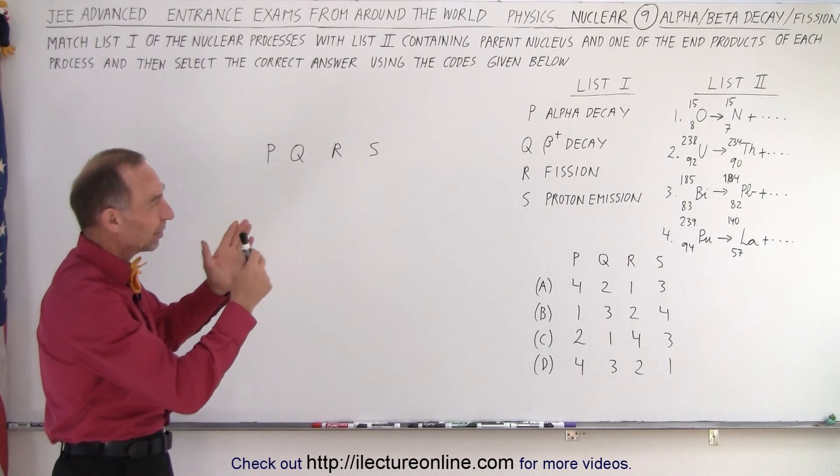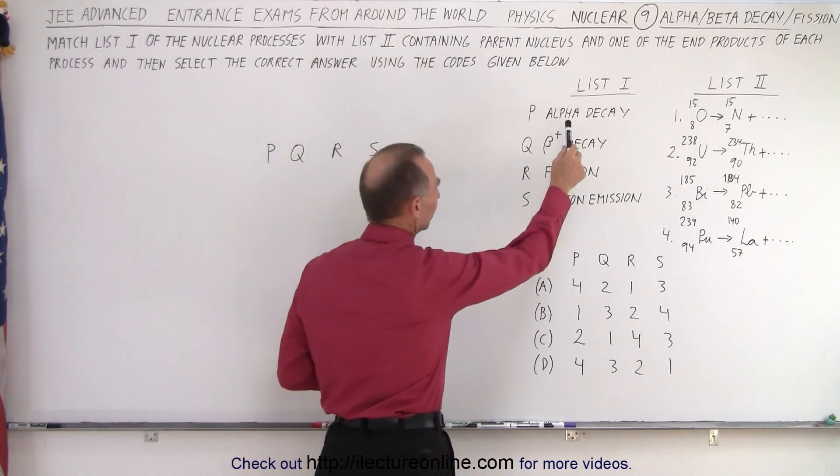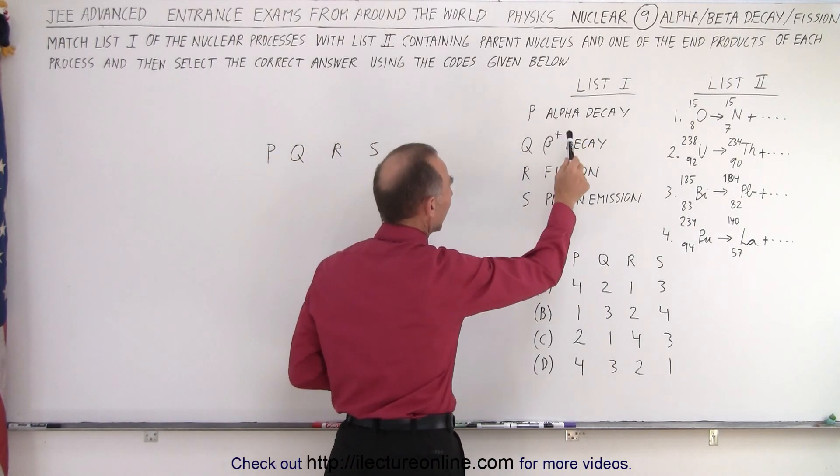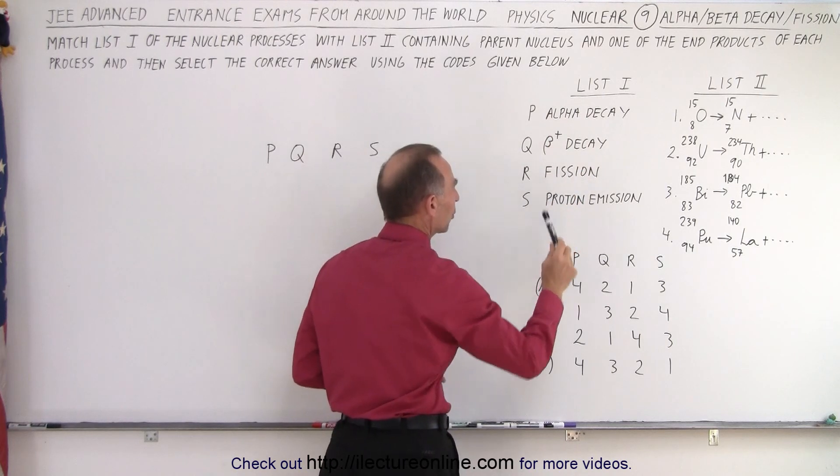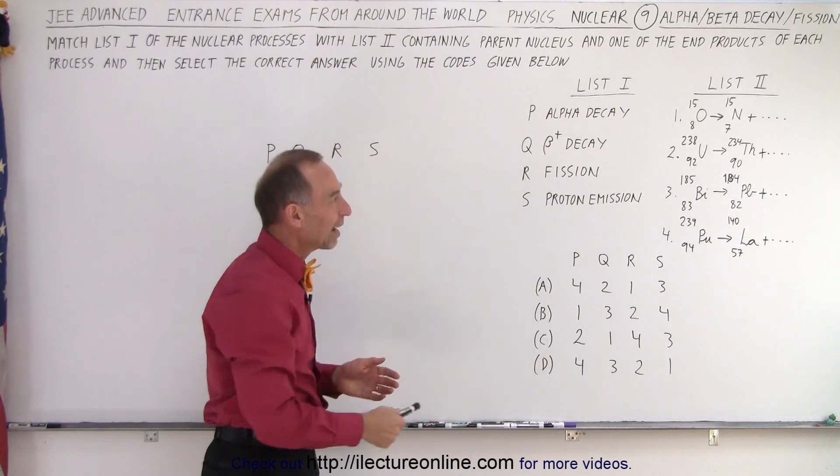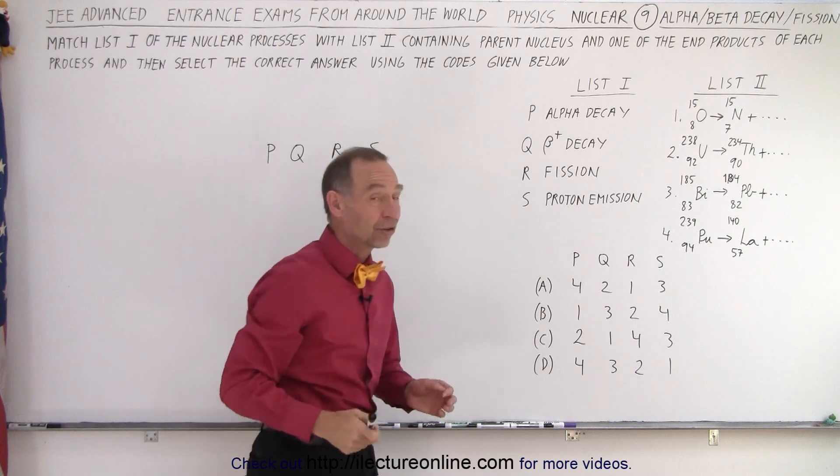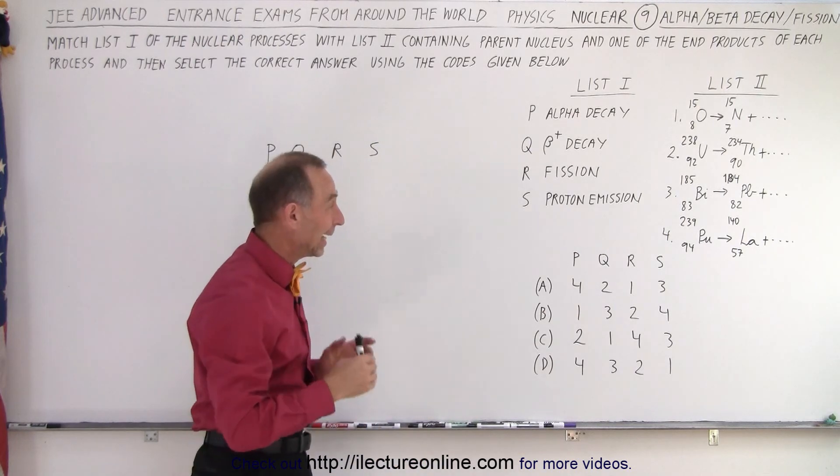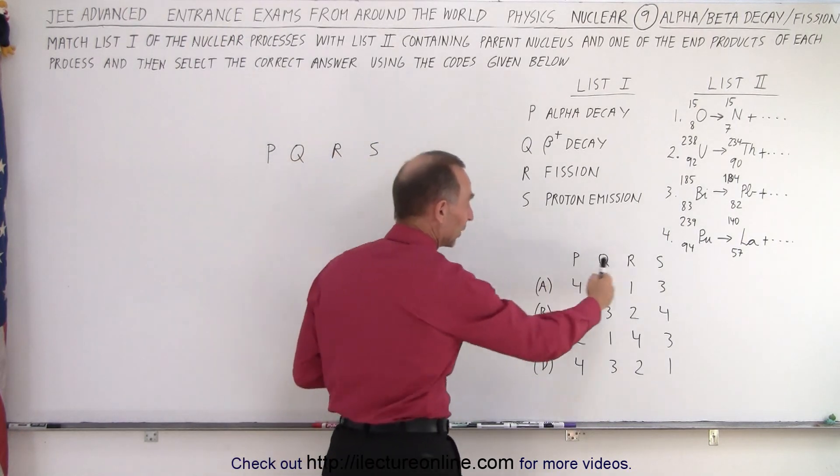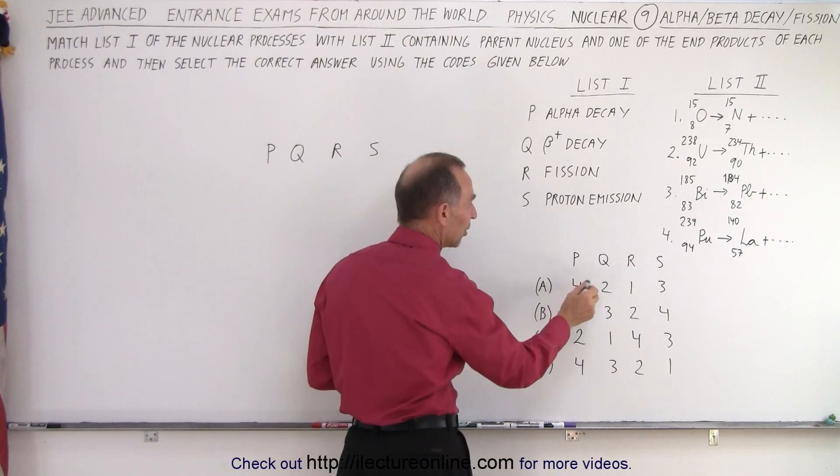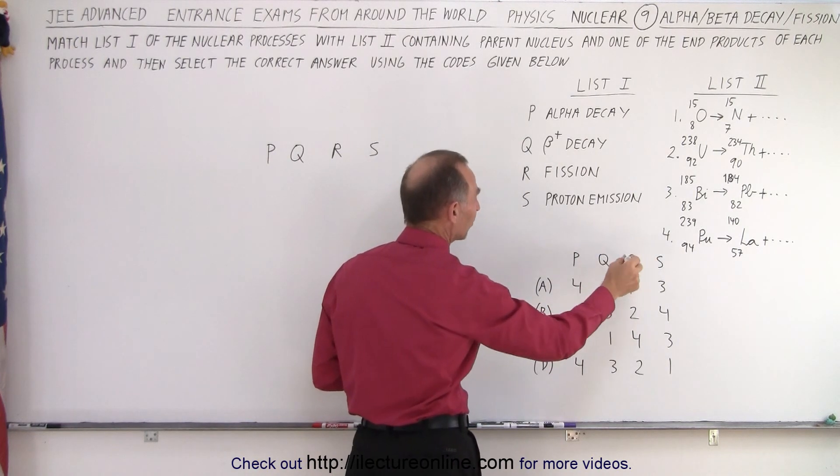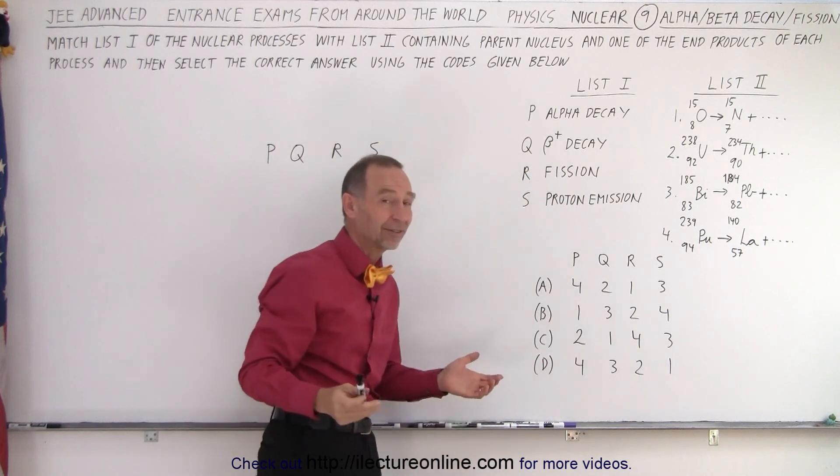Notice they give us some lists of nuclear decay processes. We have alpha decay, beta plus decay, fission and proton emission, and then we have four nuclear reactions. We're supposed to pair them up, and then notice we have four possible answers where we assign a number to each of the P, Q, R, S representing the four different decay processes.